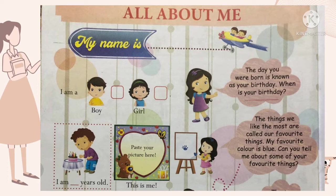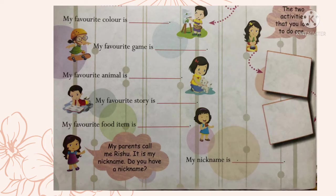Now look at the pink cloud: 'The day you were born is known as your birthday.' Yaane ke jo din aap paida hote hain — that is your birthday, vo aapka janam din hota hai. You have to write your birth date in the dash — aapko apni birth date likhni hai. For example, Riya's birth date is 15th January. Here write your favorite color — 'My favorite color is dash.' And 'My favorite game is dash.' For example, Riya's favorite color is blue and her favorite game is football.